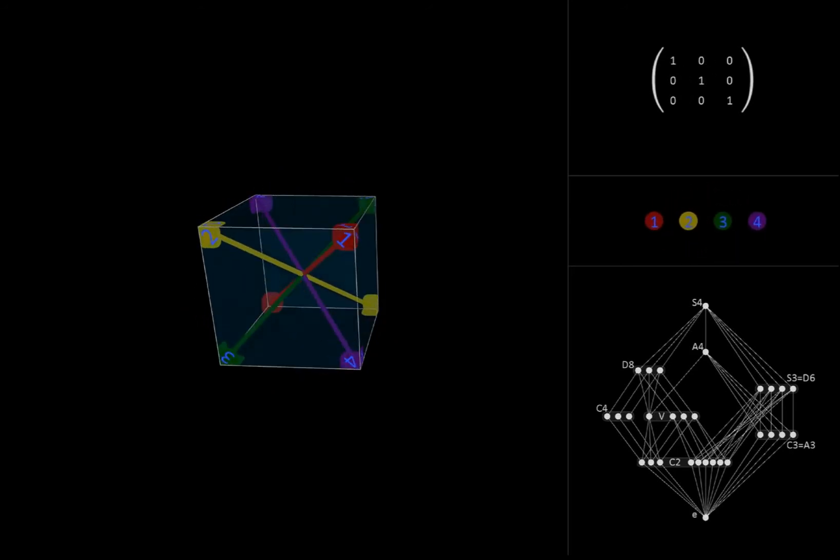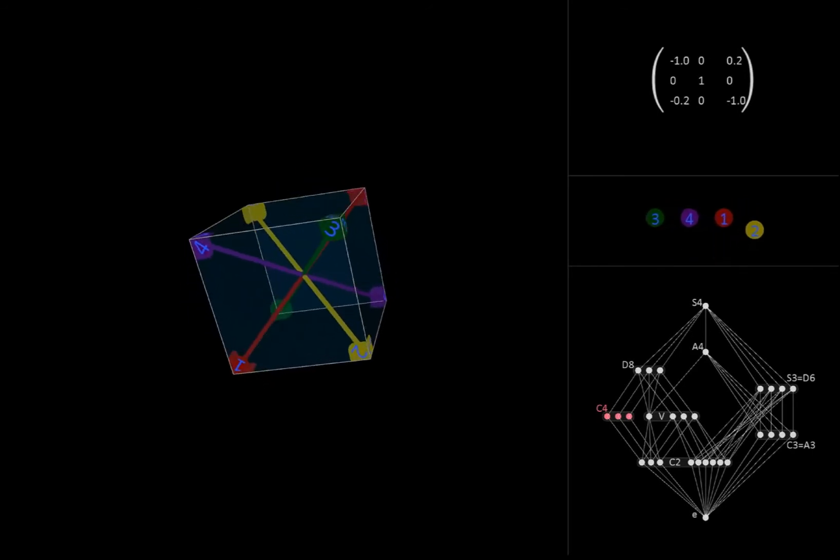Now let's take a look at the subgroups of S4 and see how we can interpret them both combinatorially and as spatial transformations. We'll start with the cyclic groups of order 4, denoted here by C4. Here's one of them, consisting of four rotations in increments of 90 degrees about the y-axis.